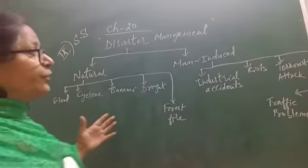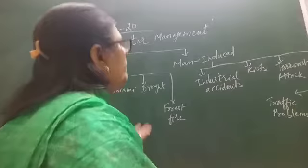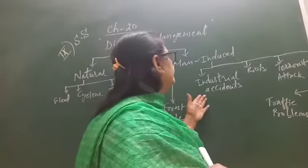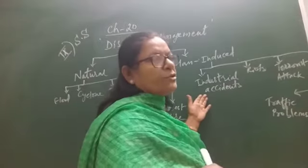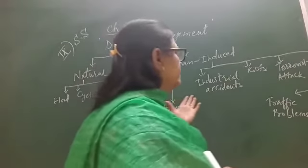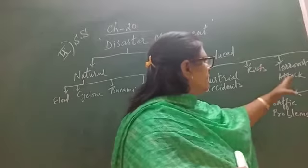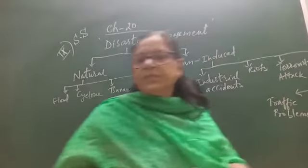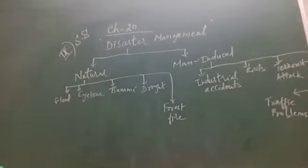Man-induced disasters are caused by the evil or negligent actions of humans — such as industrial accidents due to machines or shocks. These also include riots, terrorist attacks, bomb blasts, and traffic problems. These are man-induced disasters.